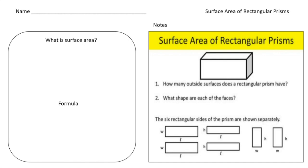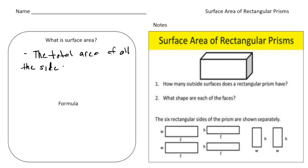So what exactly is surface area? Let's write down the definition. Surface area is the total area of all the sides. And normally when we talk about surface area, we're talking about three-dimensional shapes — let's write down 3D shapes.